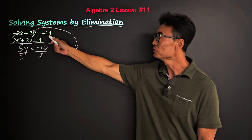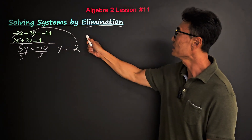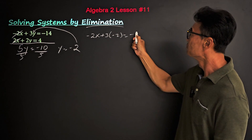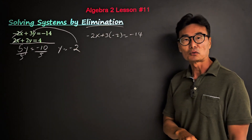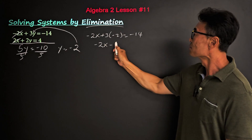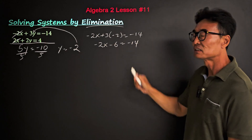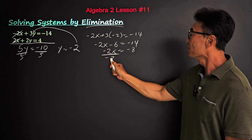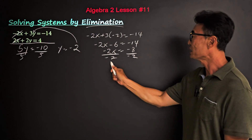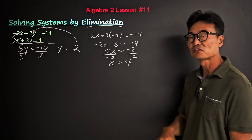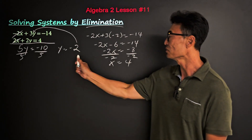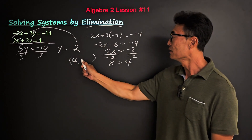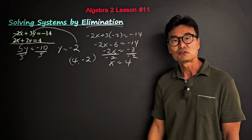Plugging negative 2 into the first equation gives us negative 2x plus 3 times negative 2 equals negative 14, so negative 2x minus 6 equals negative 14. Dividing both sides by negative 2 gives x equals 4. The final answer is x equals 4 and y equals negative 2.